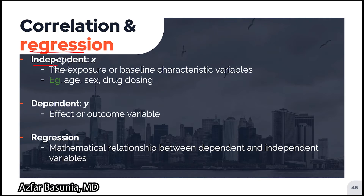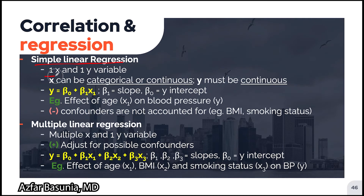For regression, the independent variable (often denoted x) refers to the exposure variable — such as drug dosing or baseline characteristics like age and sex. The dependent variable (often denoted y) refers to the effect or outcome variable. In simple linear regression, we have one independent (x) and one dependent (y) variable. The type of regression — linear or logistic — is determined by y: if y is continuous, the regression is linear. The equation is y = β₀ + β₁x, where β₁ is the slope and β₀ is the y-intercept.